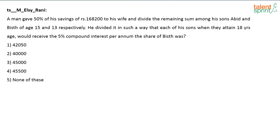One son is 15 years old and one is 13 years old. Now, there is actually a typo error in the question. The actual question should read: he divided it in such a way that when both sons attain 18 years of age, they would receive the same amount, at 5% compound interest per annum. Both sons would receive an equal amount — this part should be in the question.